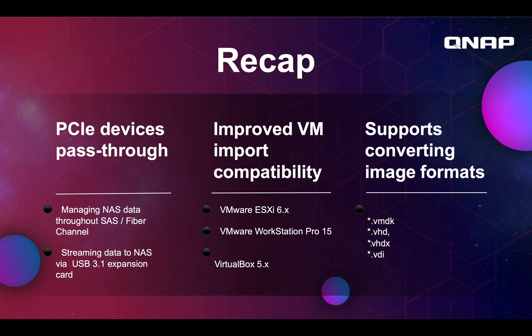All these features together should help make QNAP a great place to run your VMs. As a recap: we now support PCIe Pass-Through, which allows you to attach SAS or Fiber Channel cards, USB cards, many other cards, and graphics cards to let your VM connect to many devices or have hardware acceleration. We can import and export up to VMware ESXi 6, VMware Workstation Pro 15, and VirtualBox 5. And we can convert VMDK, VHD, VHDX, and VDI files to make importing and exporting easy.